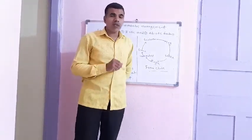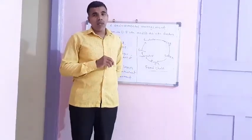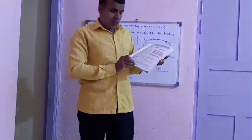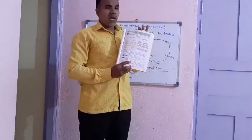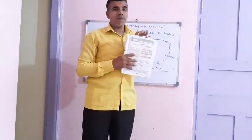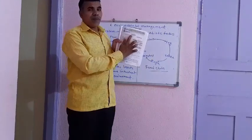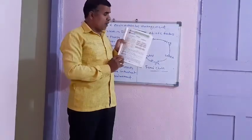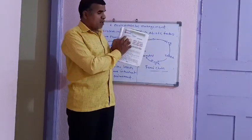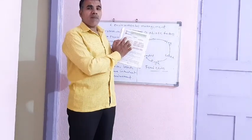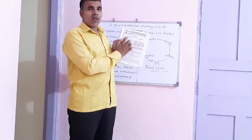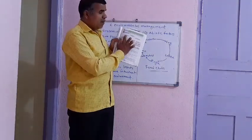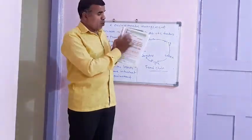Next, we have to understand the ecosystem chart. In our books on page number 37, there is a chart we have to complete. In this chart: ecosystem has two types of factors — biotic factor and abiotic factor. Abiotic factors means air, water, and soil. These are the abiotic factors. These are the two parts of the ecosystem.